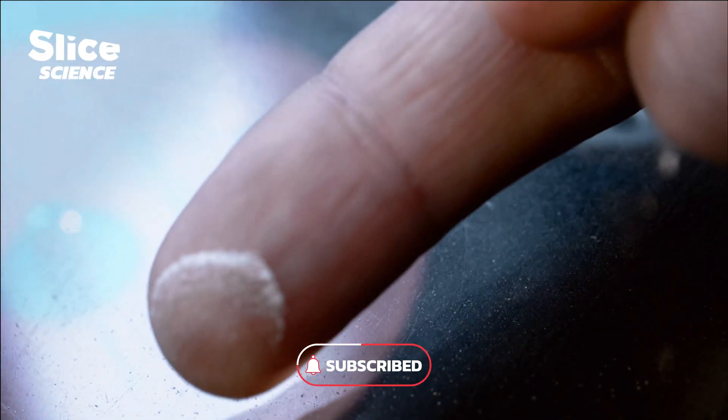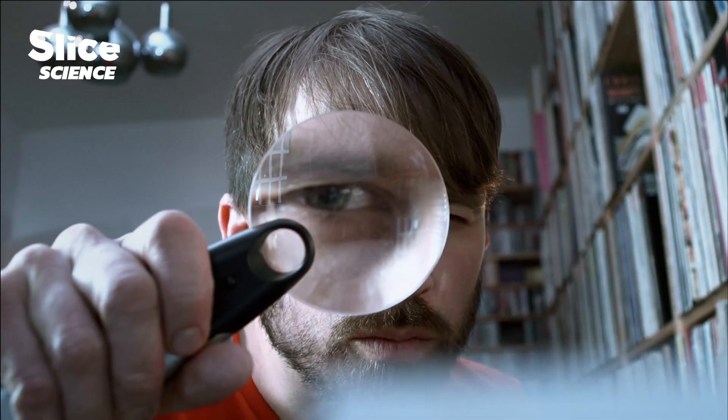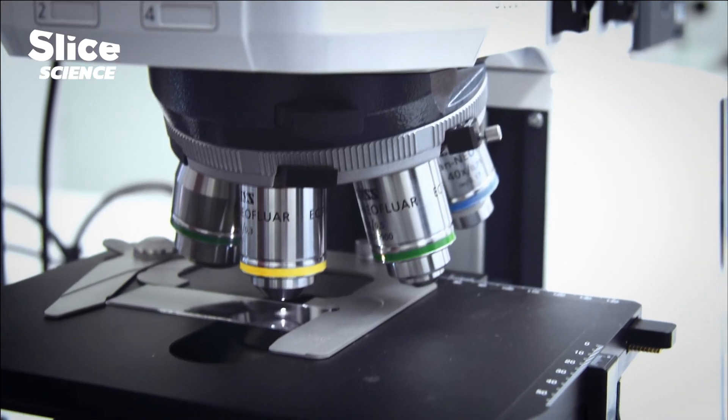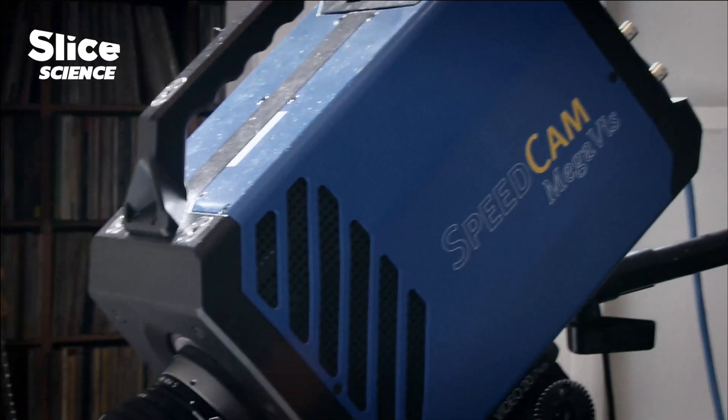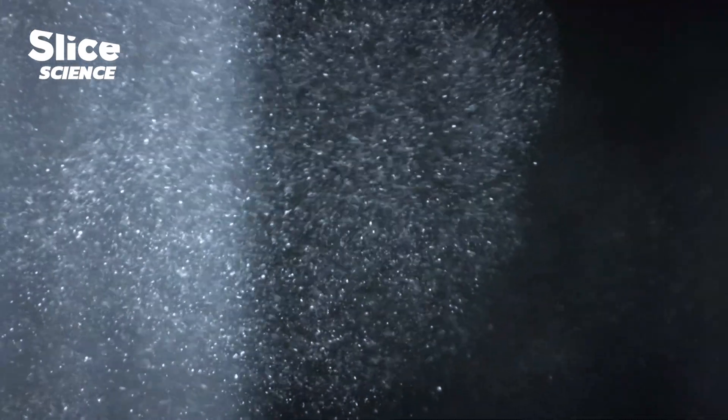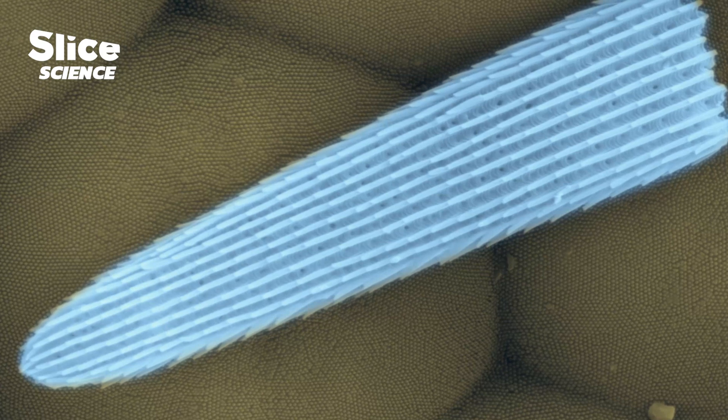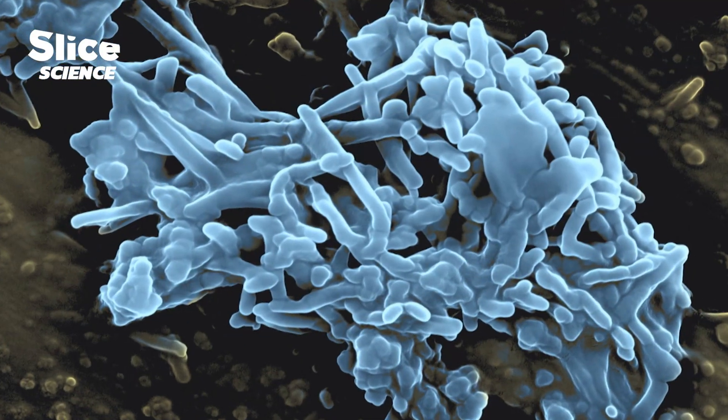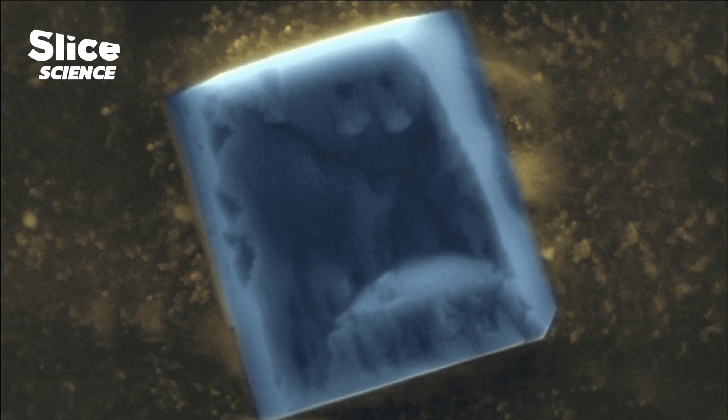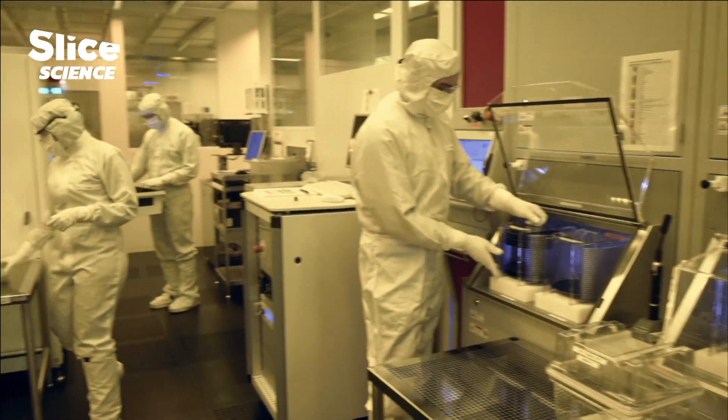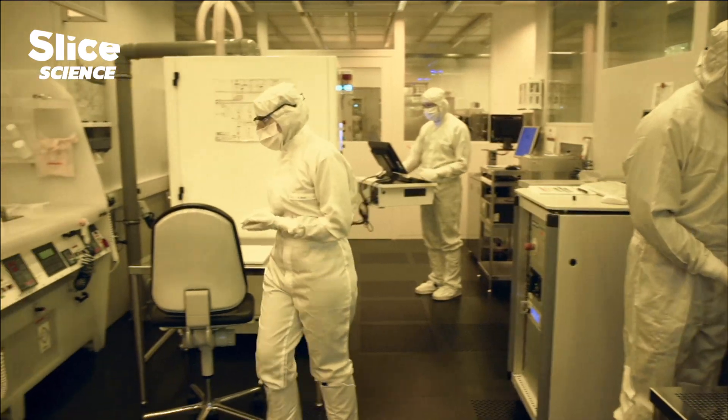Dust gets everywhere. Especially if you look at it closely, special cameras reveal a collection of different shapes and sizes. When magnified, these dust particles look like an alien universe of planets and mysterious creatures.